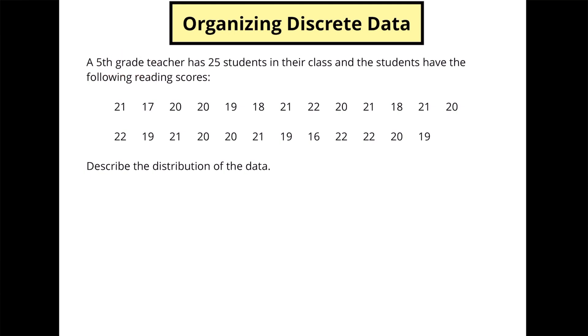So here we've got a fifth grade teacher who has 25 students in their class and they have the following reading scores. We've got all 25 scores listed out right here. So we want to describe the distribution of this data. Now there's two ways that people typically start organizing their data. The first thing they do is they'll list it all out in a row from lowest to highest. Or the other way to do it is to create a table like we're going to do here. We're going to create a frequency table.